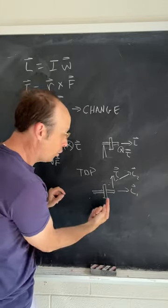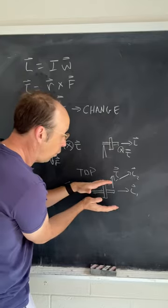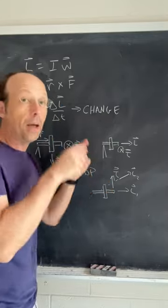my initial angular momentum. Torque is this way, that's going to change the direction of the angular momentum, so the whole wheel rotates that way. It doesn't fall down, it rotates.